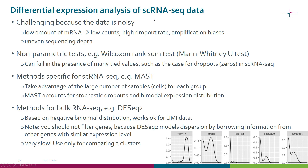Why is differential expression analysis of single cell RNA-seq data challenging? The data is noisy, the starting material is low, hence we get low counts and low UMI counts. We get high dropout rate, meaning that there can be genes which are expressed but we just don't detect them. There can also be amplification biases, so some transcripts get better amplified than others. Also, the total number of UMIs per cell varies a lot, so we have uneven sequencing depth.